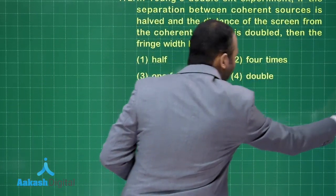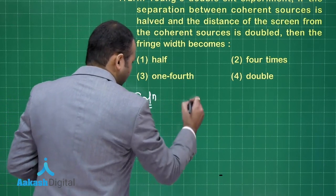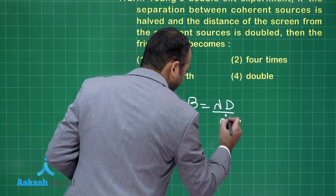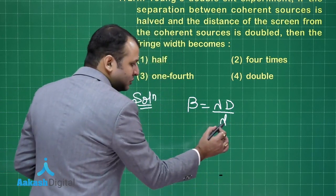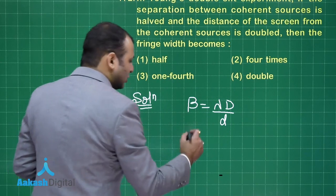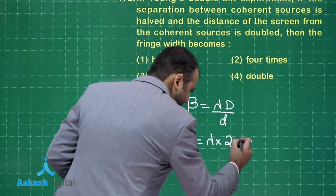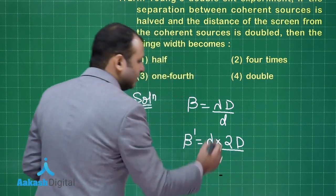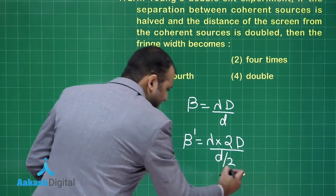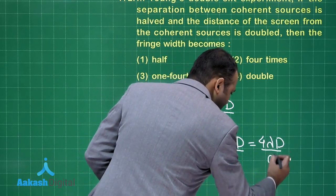It's a very simple and relation-based numerical, let's start solving. As per the formula, fringe width is given by lambda capital D by small d, where small d is the distance between the slits and capital D is the distance between the slits and the screen. As per the question, if I double the distance that is capital 2D and reduce the distance between the slits by half, this would be 4 lambda capital D by small d.